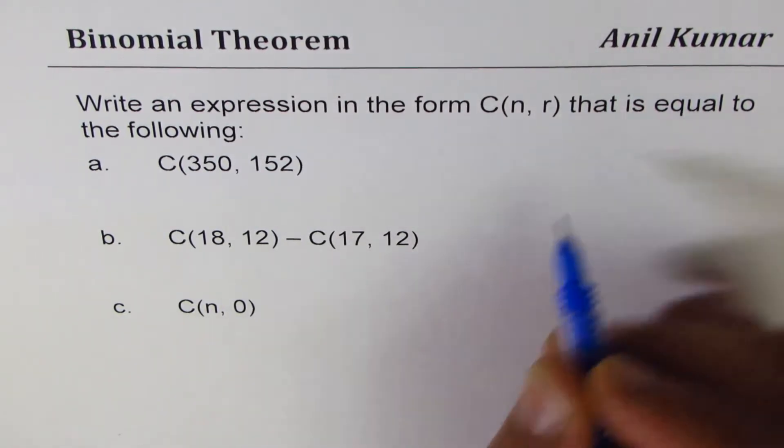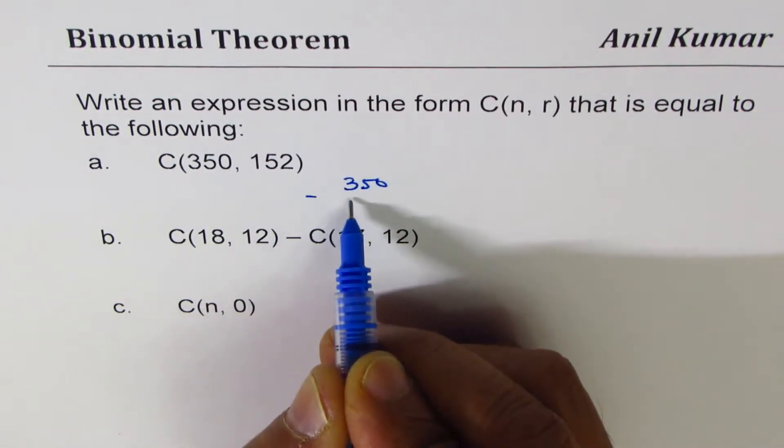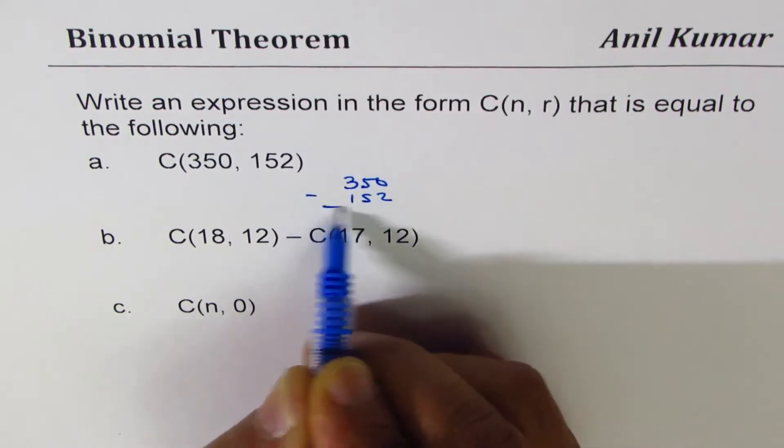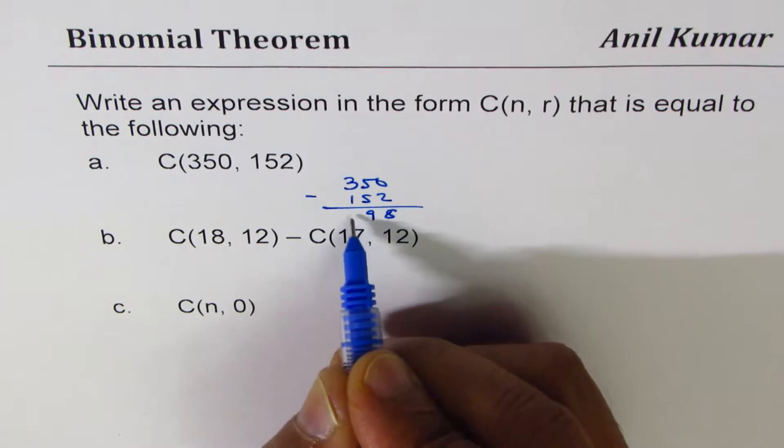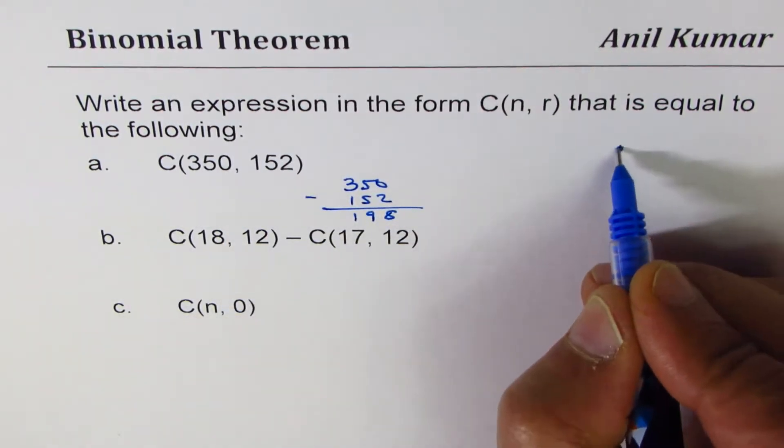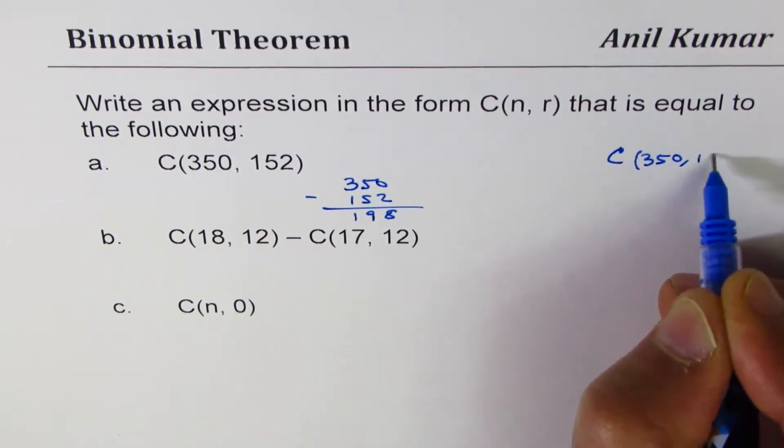So the first one here could be written as what is 350 take away 152. So that is 198.